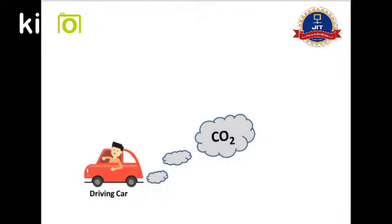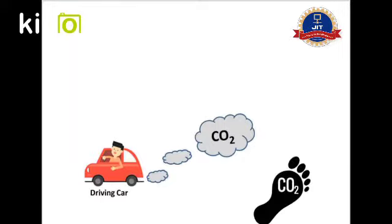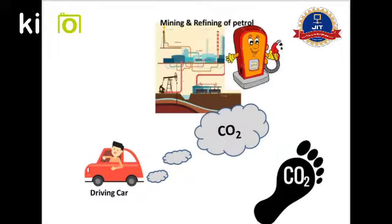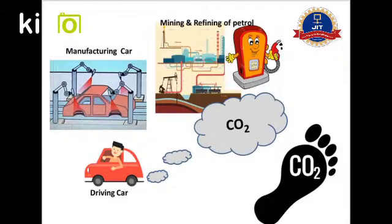Now, for example, we are driving a car. The only carbon dioxide emitted is the exhaust — is it really so? What about the carbon dioxide emitted during mining, transport to the refinery, processing and transport of the petroleum to a local petrol pump? Similarly, carbon dioxide is also released during the production of the car, which is still larger. Thus, the carbon footprint for driving a car is far greater than the carbon dioxide emitted only by its exhaust.